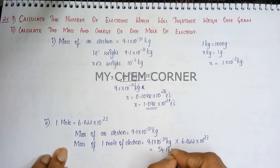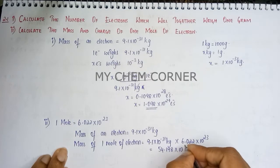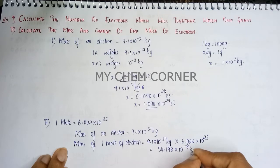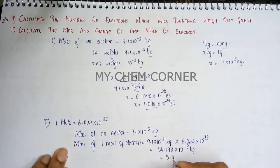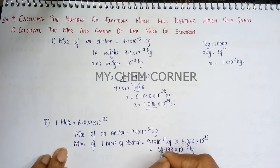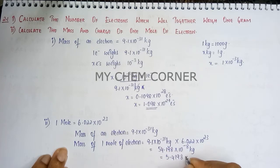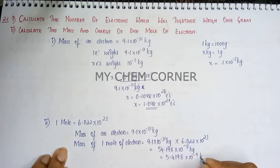Multiplying these values gives 54.198 × 10⁻⁸ kg, which we rewrite by shifting the decimal to get 5.4198 × 10⁻⁷ kg. This is the mass of 1 mole of electrons.